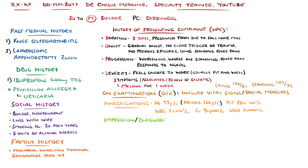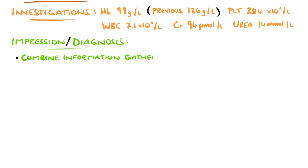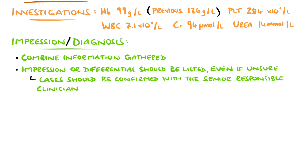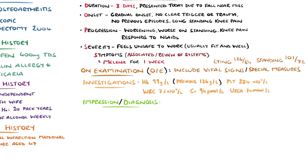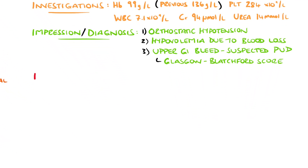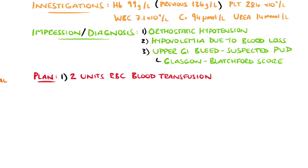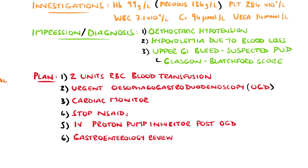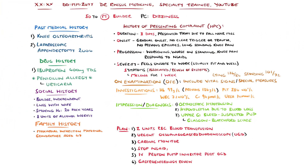Based on the combination of your history, physical exam and investigations, a problems list and differential should be formed and listed. Listing the differential also helps provide a framework for a solid management plan. In our case, it could be orthostatic or postural hypotension secondary to hypovolemia coming from blood loss, and upper GI bleeding from a suspected peptic ulcer secondary to ibuprofen use. You'd also include any relevant scoring systems here, like the Glasgow Blatchford score for upper GI bleeds. Your plan should match the issues identified — for example: blood transfusion of 2 units of red blood cells, urgent endoscopy, keep the patient on a cardiac monitor, stop ibuprofen use to prevent further injury, intravenous proton pump inhibitors post-endoscopy, and a gastroenterology review. This way each problem will be addressed and the management plan becomes more organised.